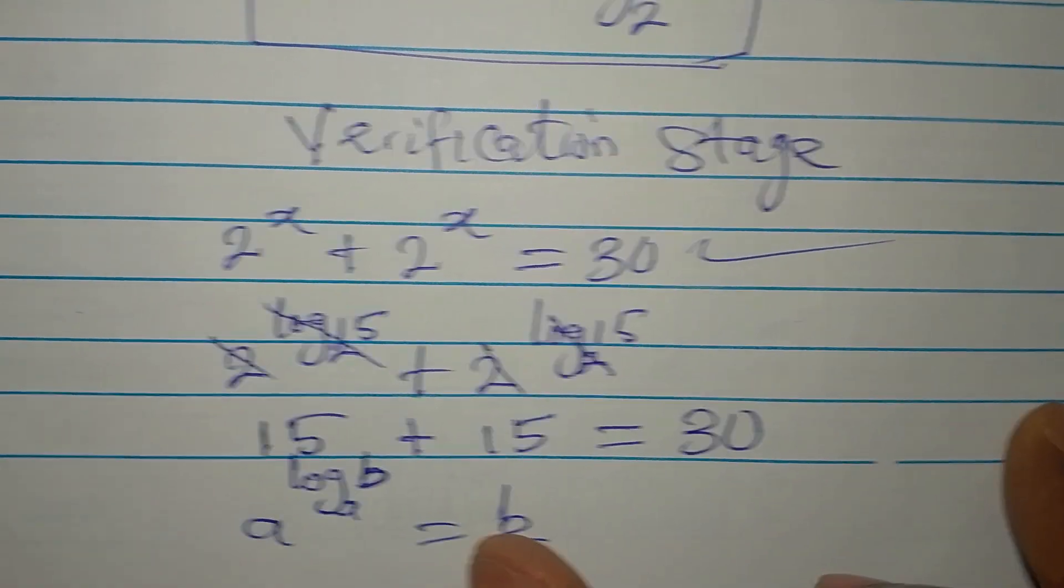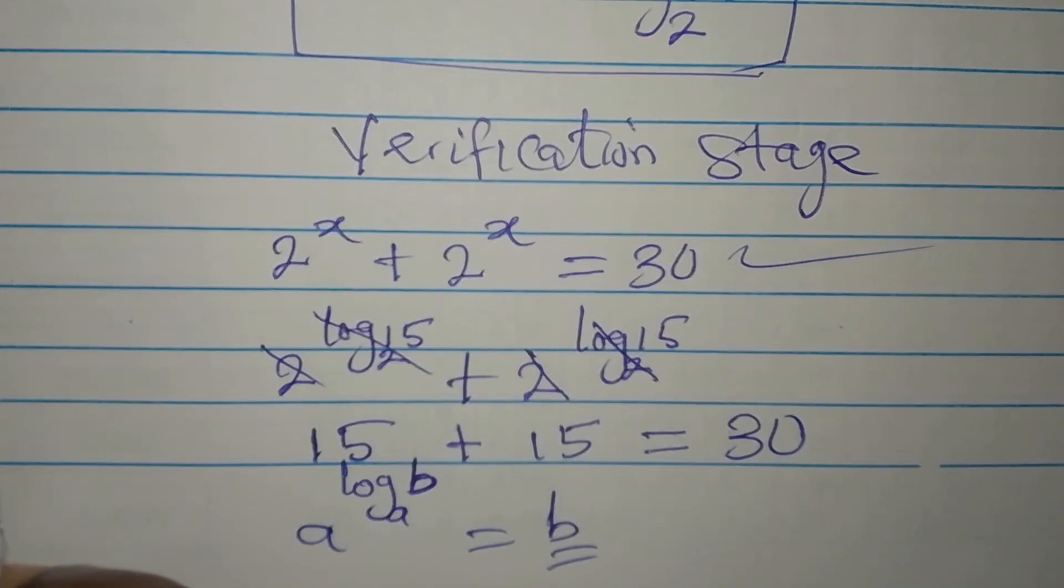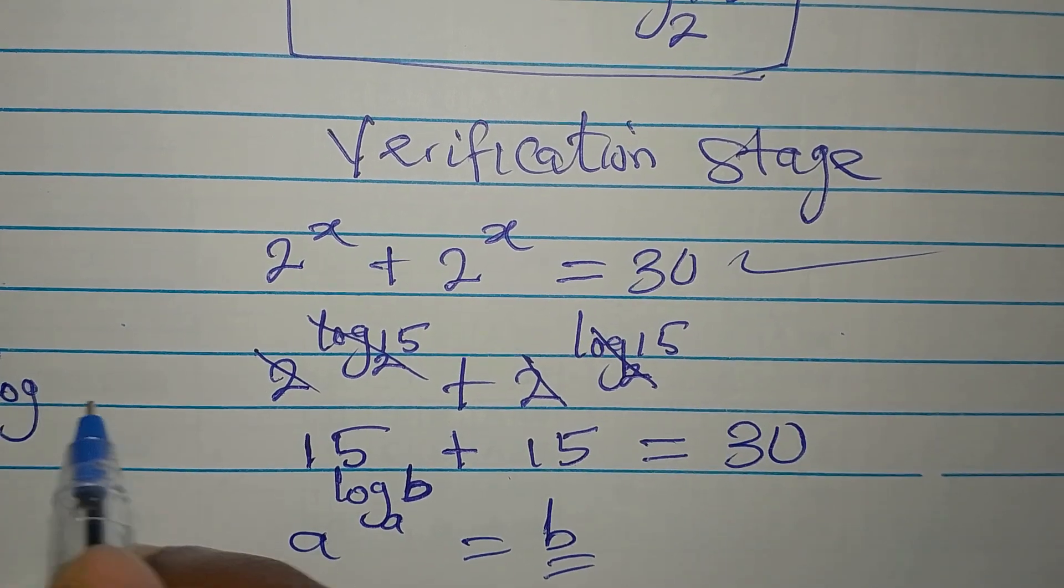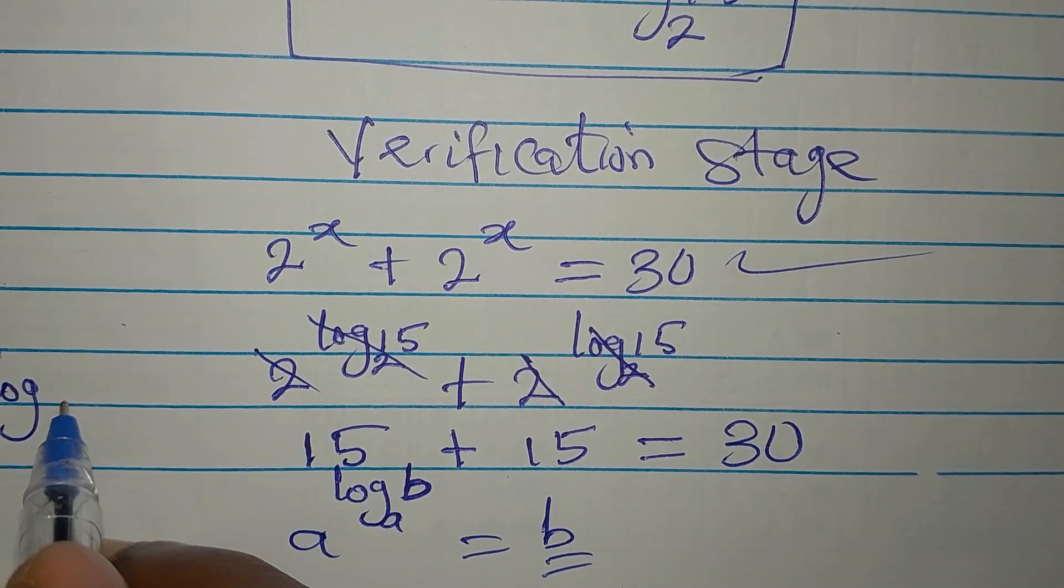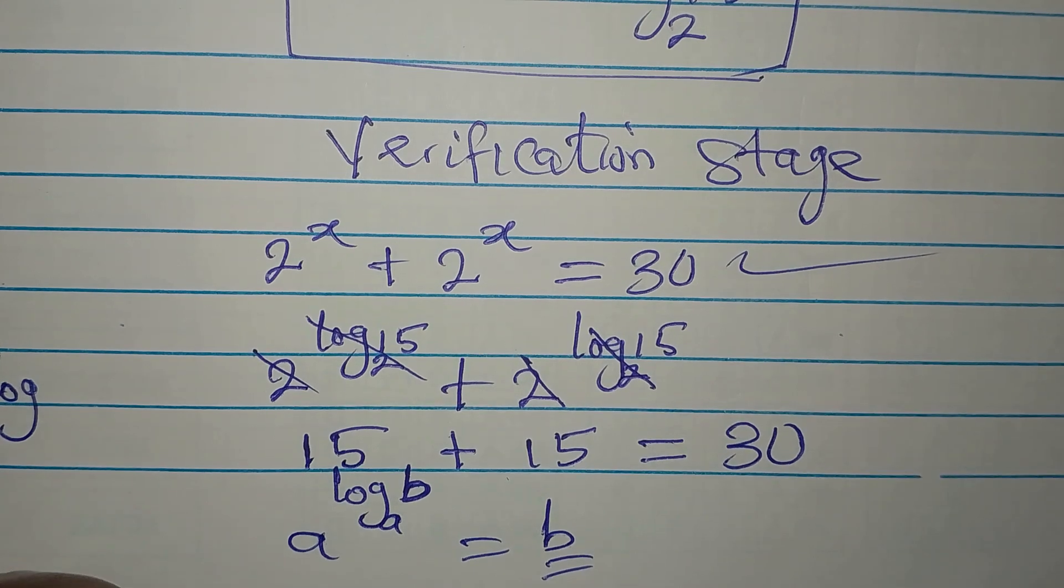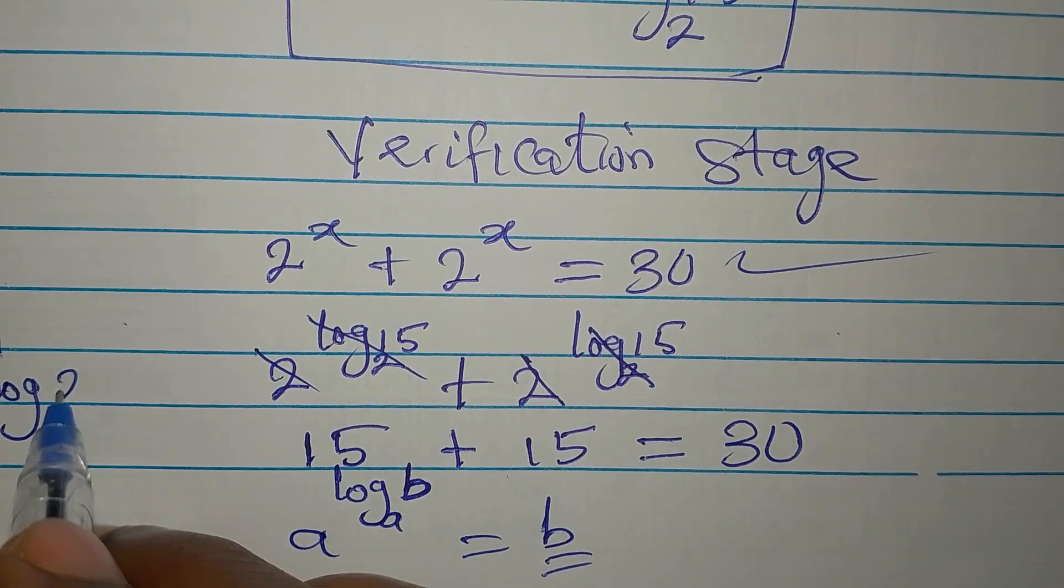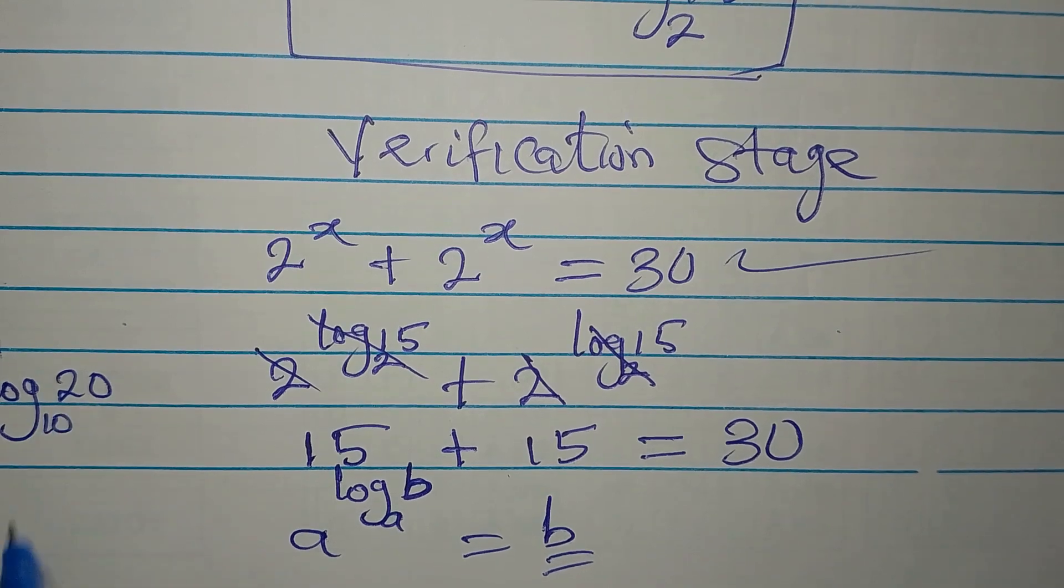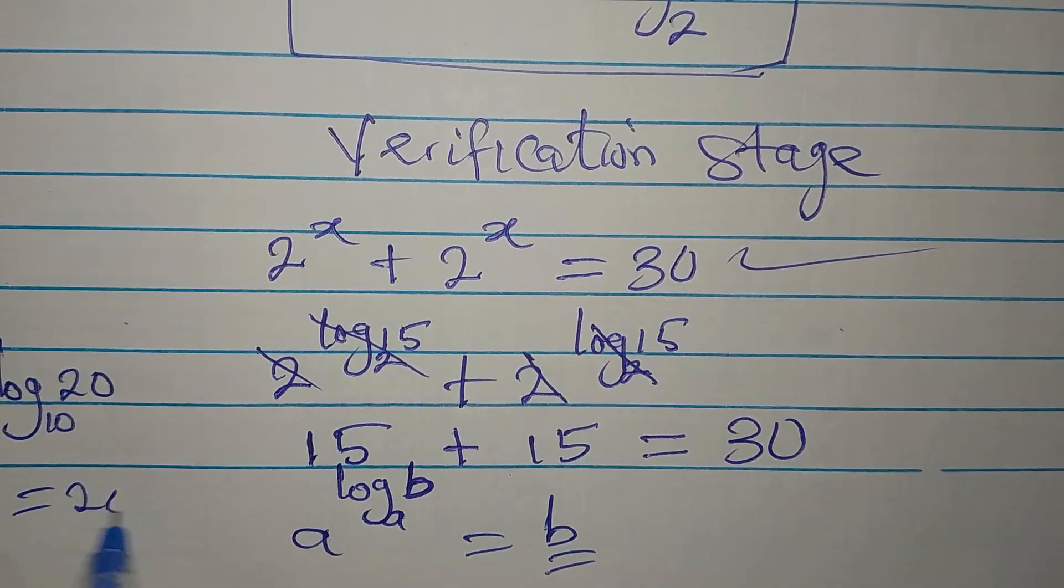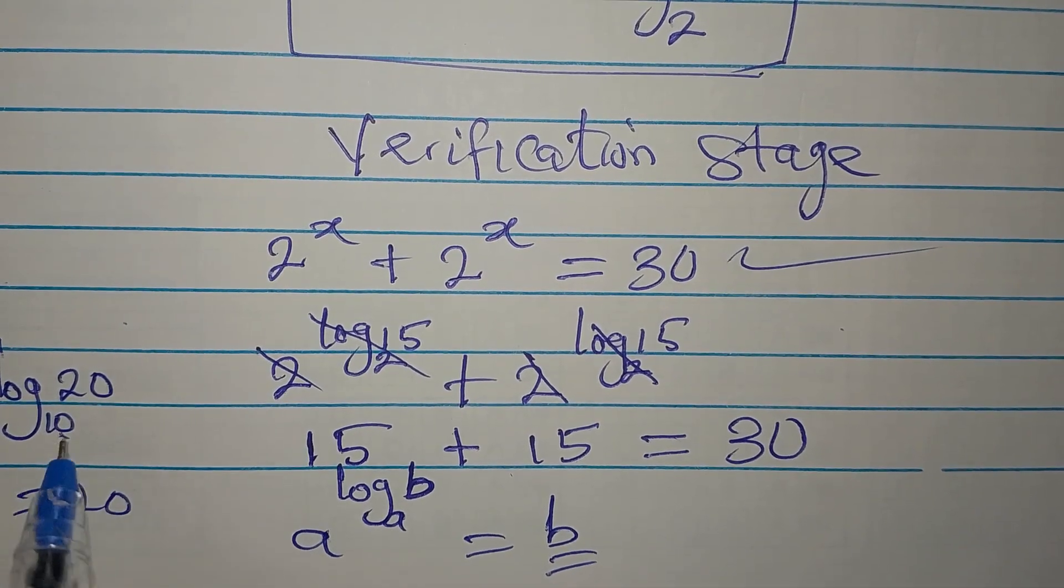Okay? In the same way, if you have 10 to the power of log b, log 20 to base 10. This is equal to 20 because this and these are the same, right?